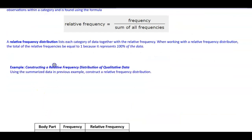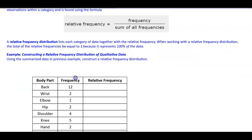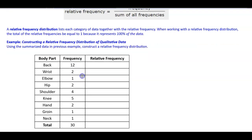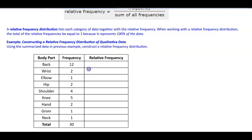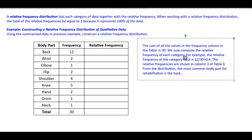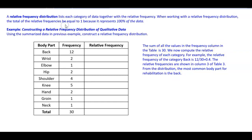Now let's construct a relative frequency distribution using the same data from the previous example. We know that the sum of all values in the frequency column is 30, which is important as our denominator.